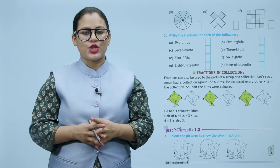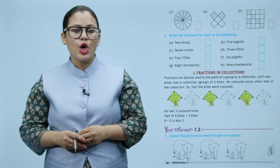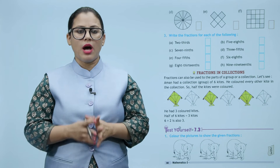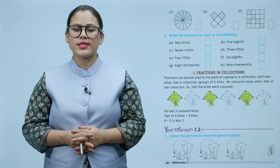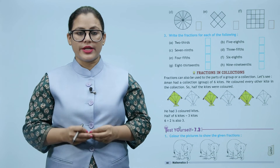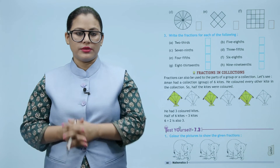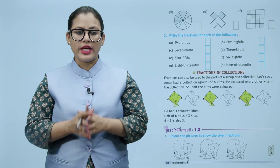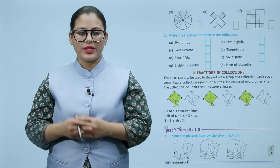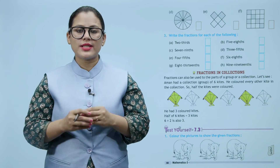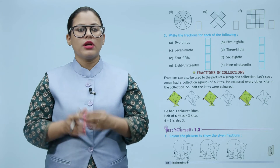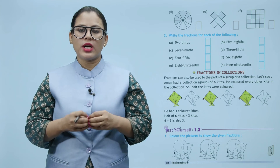Fractions in collections: fractions can also be used to describe parts of a group or a collection. Aman had a collection of six kites. He colored every other kite in the collection, so half the kites were colored. He had three colored kites. Half of six kites is equal to three kites; six divided by two is also three. We can have a fraction of either a group or a collection.